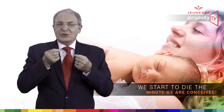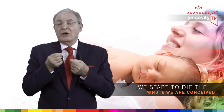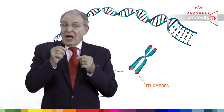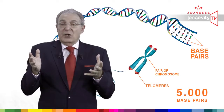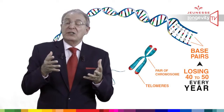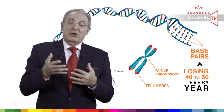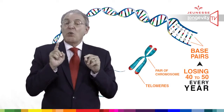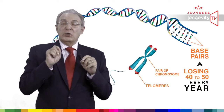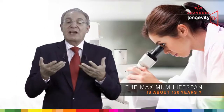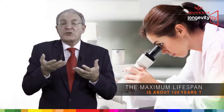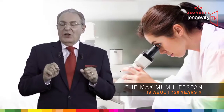In a sense, we start to die the minute we are conceived. When telomeres are reduced to 5,000 base pairs, our cells become senescent and die. We are losing approximately 40 to 50 base pairs every year, so theoretically it should take 120 years to get all our telomeres reaching these 5,000 base pairs. This is why some scientists believe that the maximum lifespan is about 120 years.